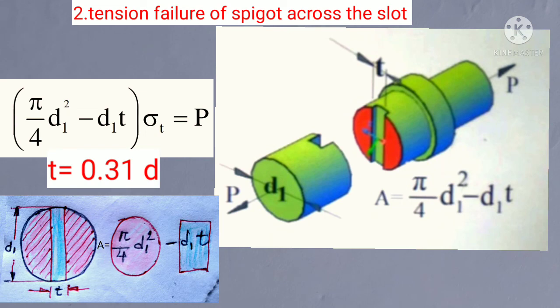Number two is the tension failure of cotter across the slot. Here we can see that the area is (pi/4) D1² minus D1 × T, where T is the thickness of the cotter. From the empirical relation, T = 0.31 D. So we write (pi/4 × D1² − D1 × T) × sigma T = P. From this equation we get D1, which is the diameter of the cotter end.